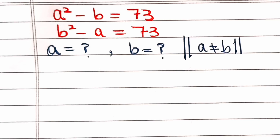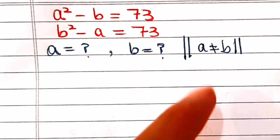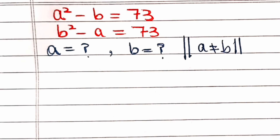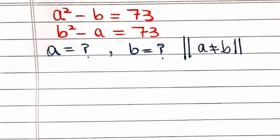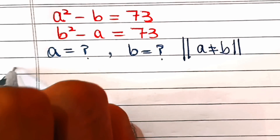Hello friends. Let us solve: a squared minus b equals 73, and b squared minus a equals 73. We need to find the values of a and b, where a is not equal to b. So let's start.